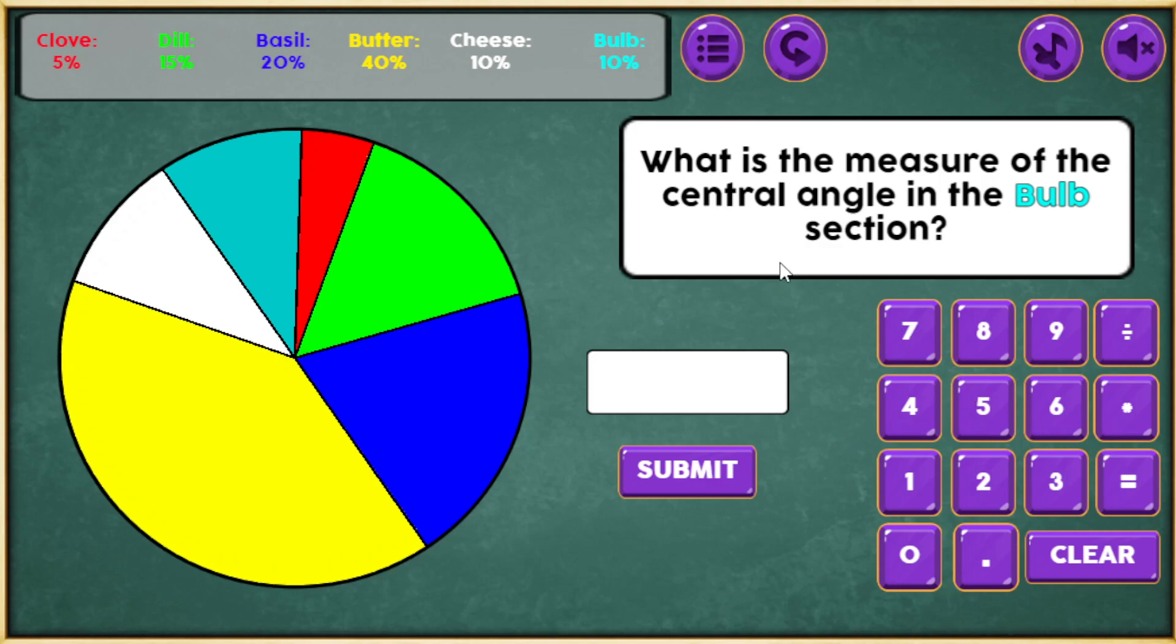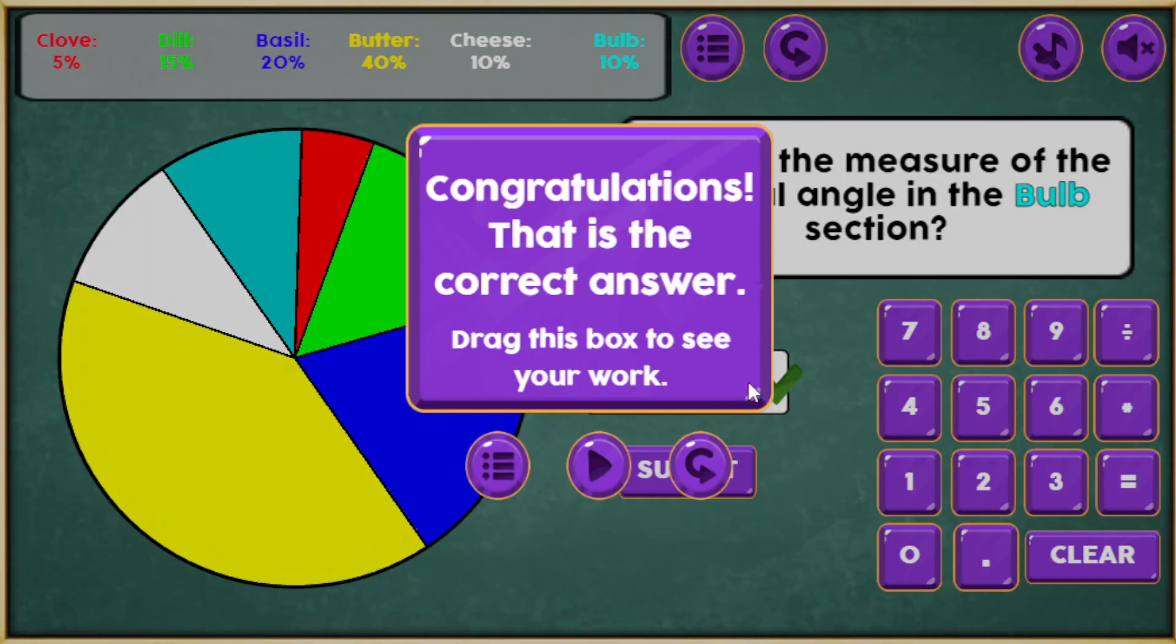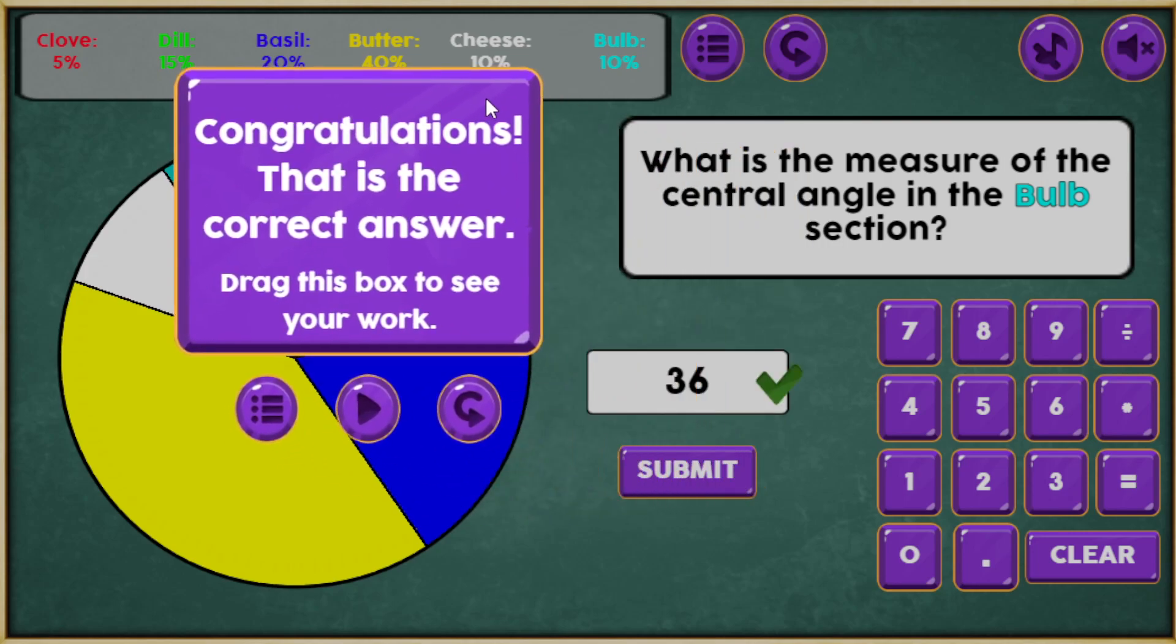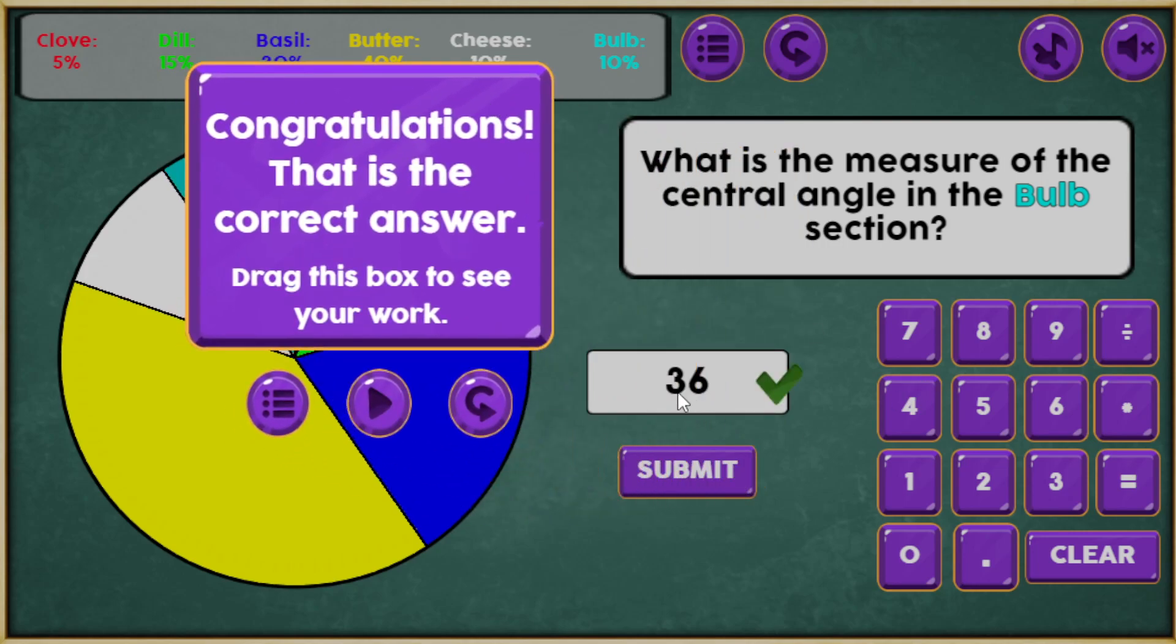And in fact, in this one, I know that all the angles in a circle equal 360 degrees, so 10% of that would be 36. So I can't type it in on the keyboard, but I'll just put it in there, and I'll go ahead and hit Submit. It says it's correct, but I just want to see it again, especially if I made it wrong.